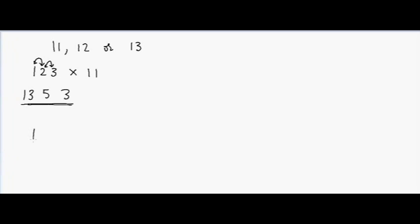So how did I do this? My first digit is the same as the first digit of the number. My second digit is 1 plus 2, which is first digit plus second digit. My third digit is second digit plus third digit. And the last digit is the last digit plus 0, because there's nothing else left. So the answer is 1353.